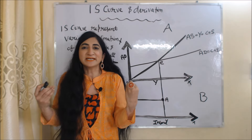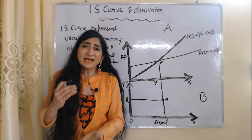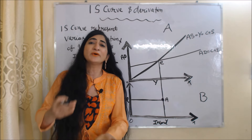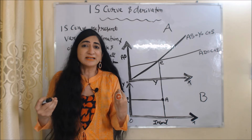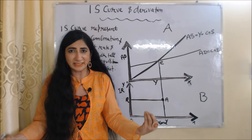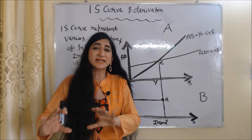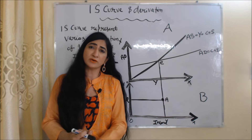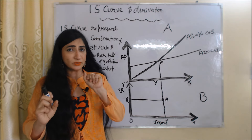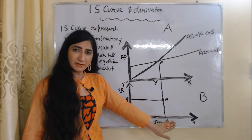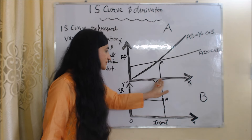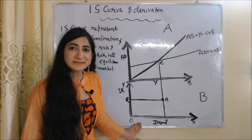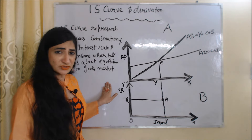So firstly we are going to talk about IS curve and its derivation. IS curve represents various combinations of income and interest rate which tell us about equilibrium in the goods market. For derivation of IS curve we need two diagrams, diagram A and diagram B. In diagram A, the X axis has income and Y axis has aggregate demand. In diagram B, the X axis has income and Y axis has interest rate.